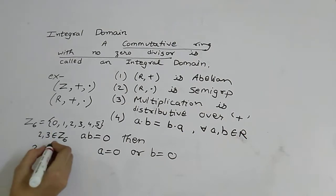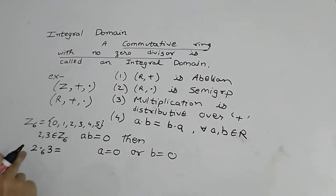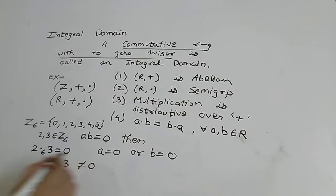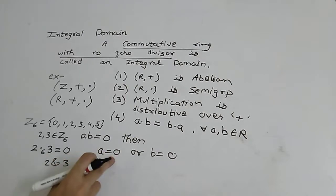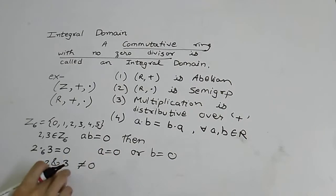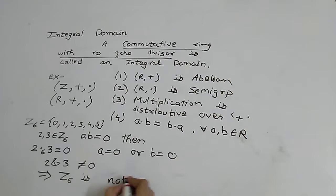So what will we write here? Remainder when 2 into 3, that is 6, is divided by 6, so remainder is 0. And here both of them, that is 2 and 3, are non-zero. This implies Z6 is not an integral domain under addition modulo 6 and multiplication modulo 6.